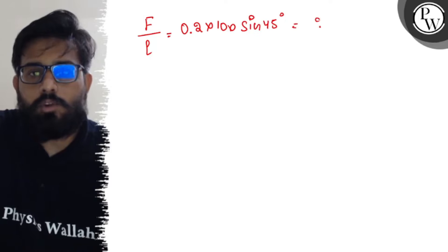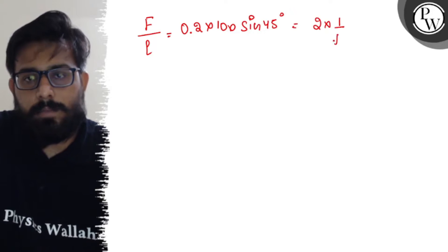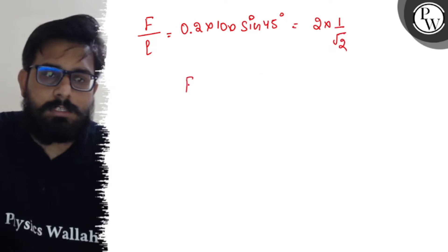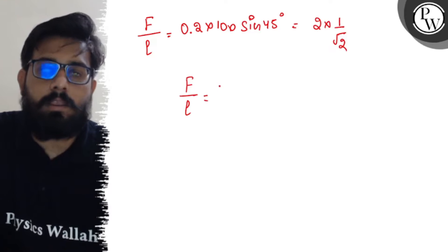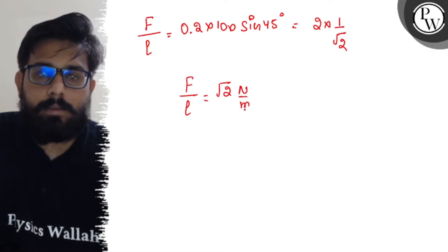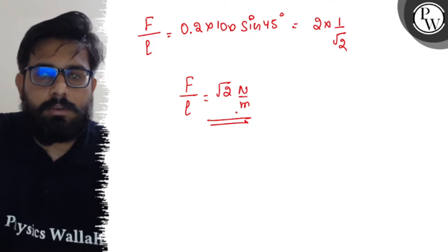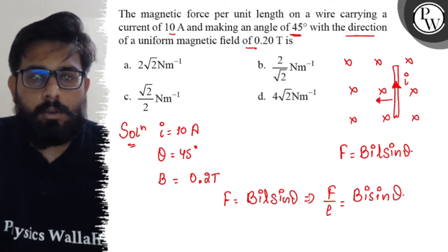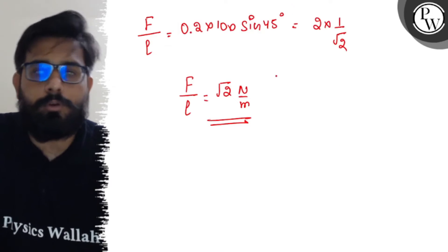So it comes out to be 2 into sine 45 degree which is 1/√2. So the force per unit length comes out to be √2 Newton per meter, or you can say it's 2/√2 Newton per meter.